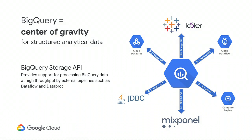We leveraged the new BigQuery Storage API to pull that large amount of data — 100 billion points — from BigQuery and move it into Bigtable. This new storage API lets you access the storage layer of BigQuery directly. Previously, when you extracted data from BigQuery, it would move out to GCS, which was time-consuming and expensive. This approach is actually a lot more efficient. We used the alpha version, which has now moved to beta. Consumers of this API include Cloud Dataflow, Dataproc, and even third-party tools like Looker, Mixpanel, and JDBC — expect to see more consumers using this approach.